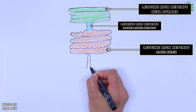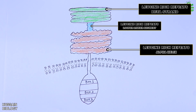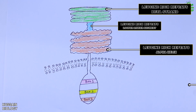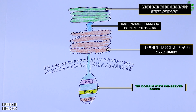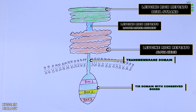Then we have some intracellular structures. In the cytoplasm we have the TIR domain — the Toll/Interleukin receptor domain — which is homologous to that of the interleukin IL-1 receptor. We also have a transmembrane domain as shown in the diagram. Basically, TLR molecules are type 1 transmembrane proteins with an extracellular leucine-rich repeat (LRR) domain and a cytoplasmic TIR domain.